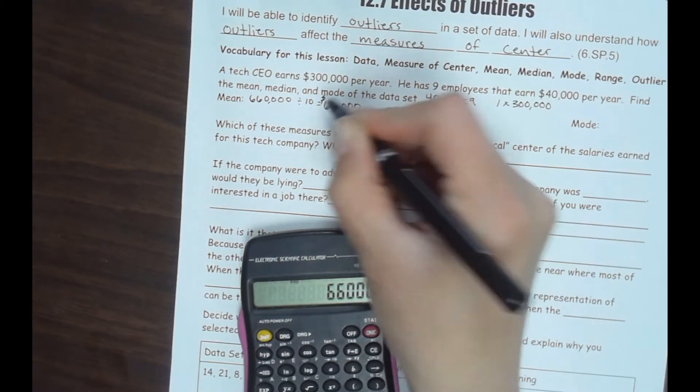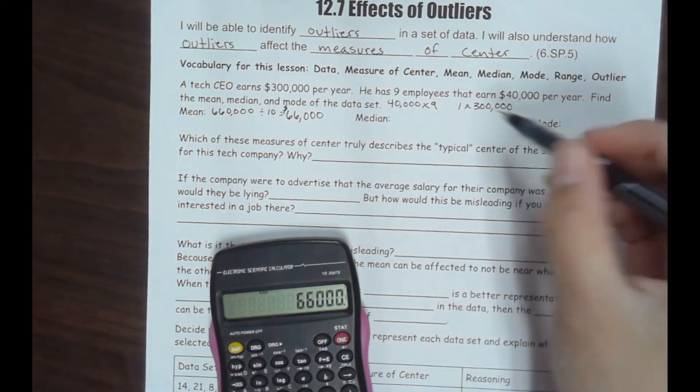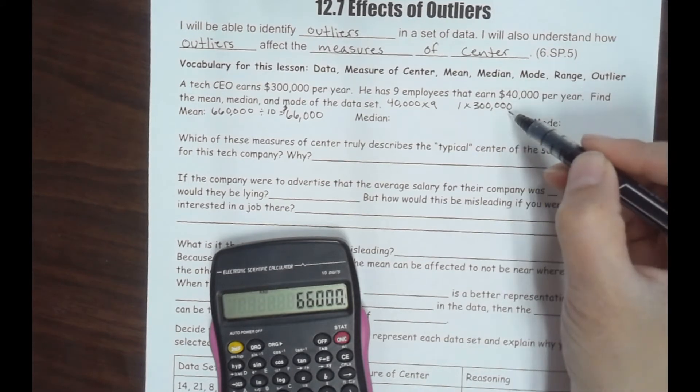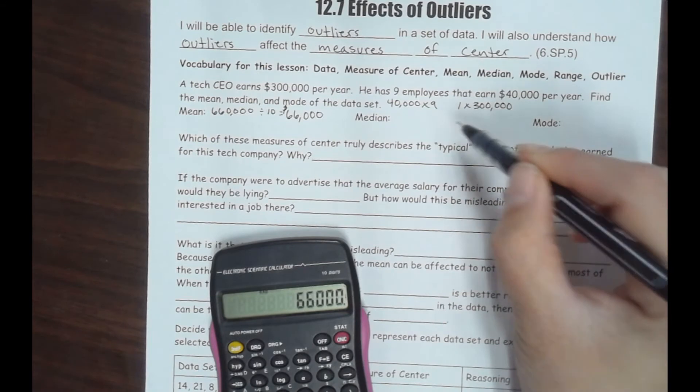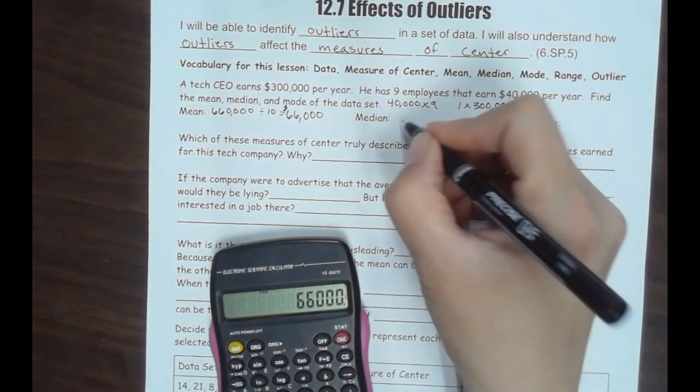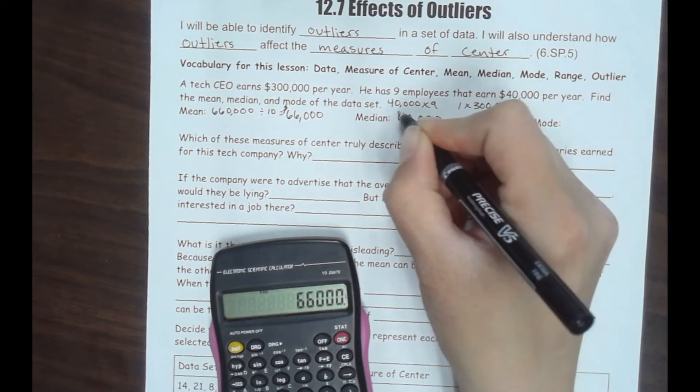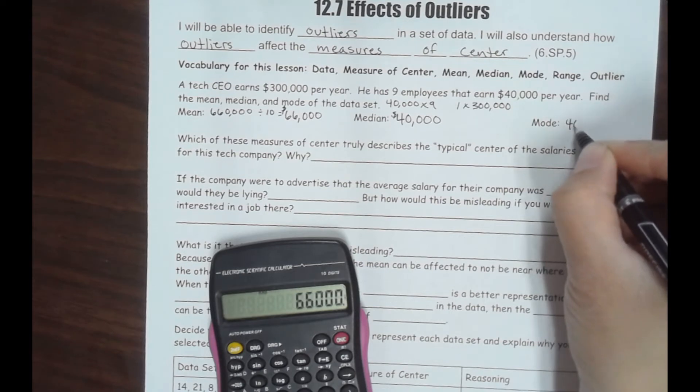Okay, the median. If we were to write these all out, $300,000 is going to be on the very end and the rest are going to be $40,000. That means $40,000 is going to be the middle two, so our median is going to be $40,000. And our mode would be $40,000 because it's the most repeated here.